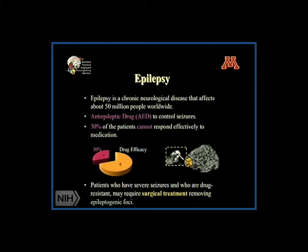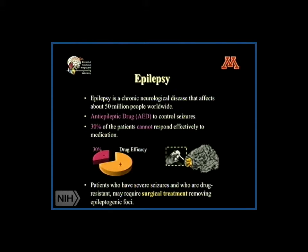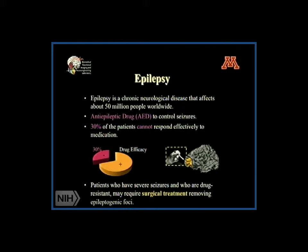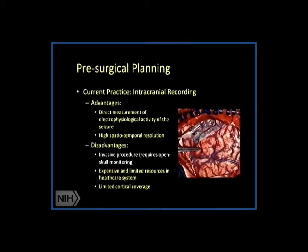Another example is epilepsy quantification and localization. As of what we know, 50 million people in the world suffer from epilepsy. About one-third of them do not respond well to drugs. Among those people who do not respond to drugs, the current clinical practice is to find out where the seizure is coming from, and if possible, one option is to resect that seizure-generating tissue to treat epilepsy.